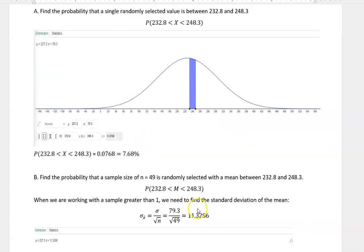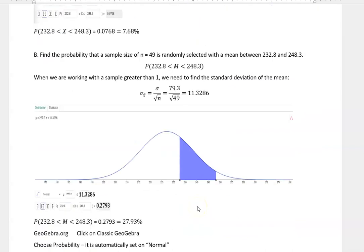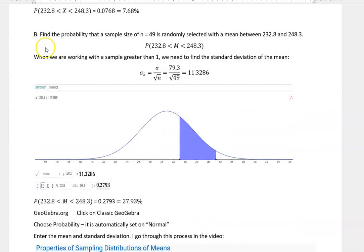So that looks a little different because we have a different standard deviation in that case. The standard deviation in that case is called the standard deviation of the mean. Whenever we work with a sample greater than one we need to do this.